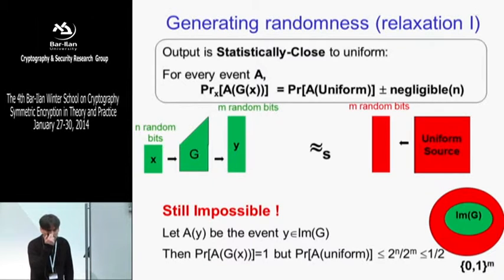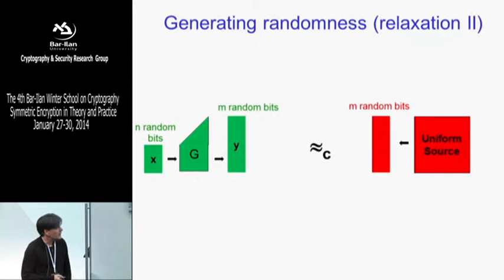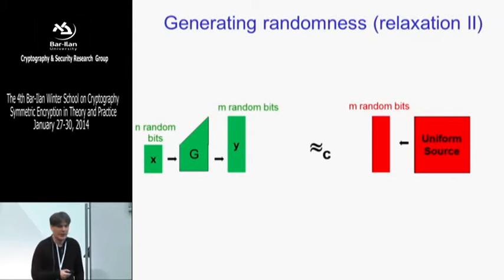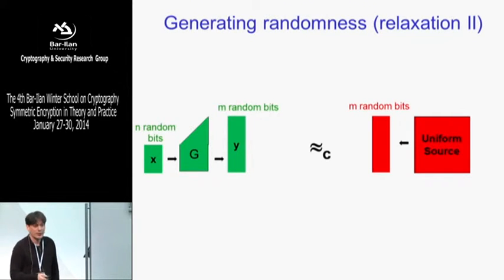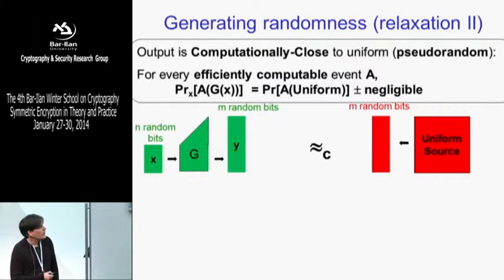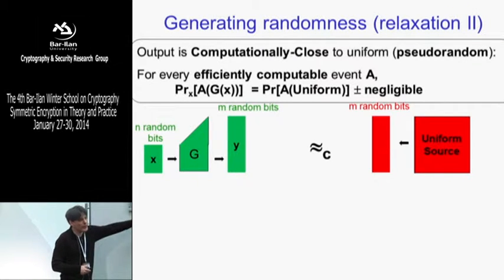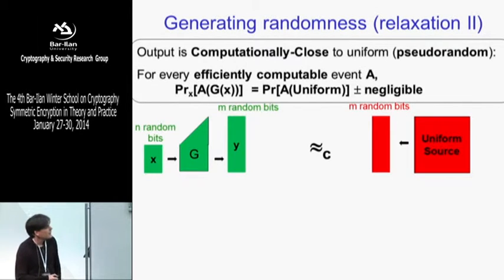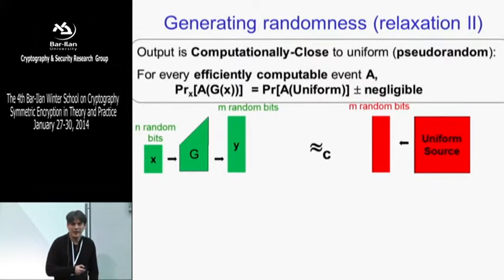We have to further relax our definition. Now we're going to do something smart: everything we did so far could have been done in the 18th century. But now we must take computational power into account, which is a relatively new concept. We're going to restrict our attention only to events that are efficiently computable. We say two distributions are computationally close if for every efficiently computable event — a Boolean function computable in polynomial time — the probabilities differ by at most a negligible amount.